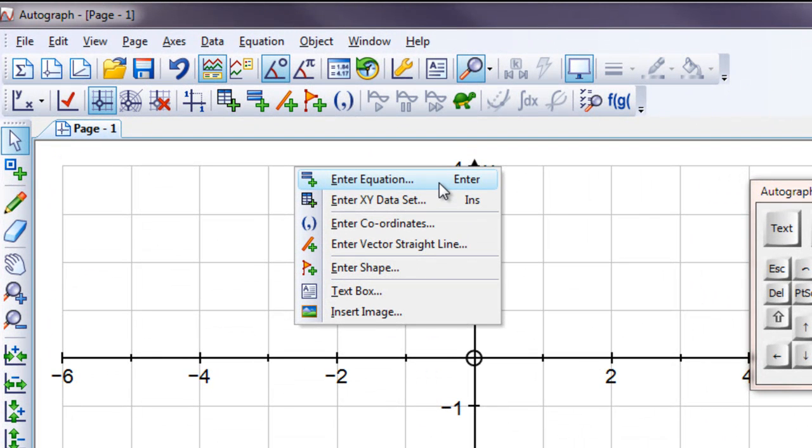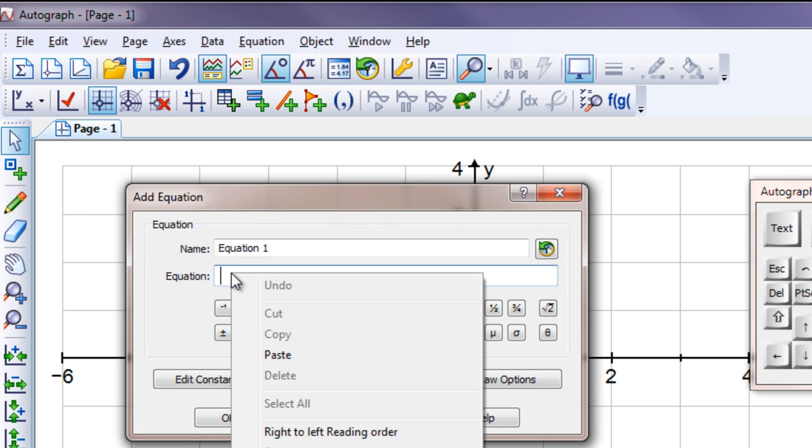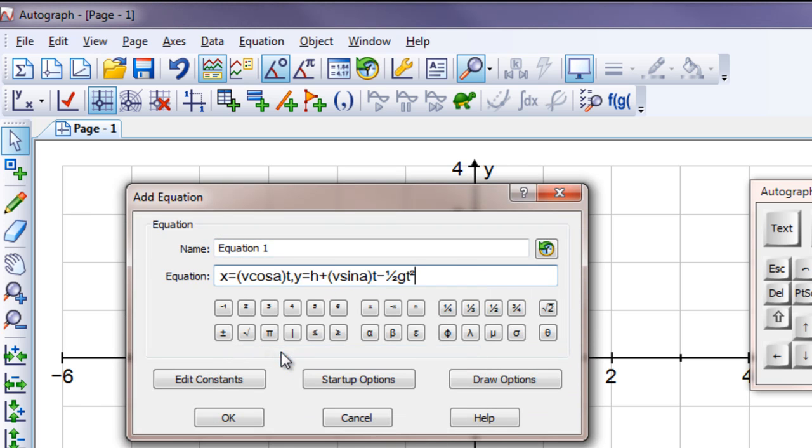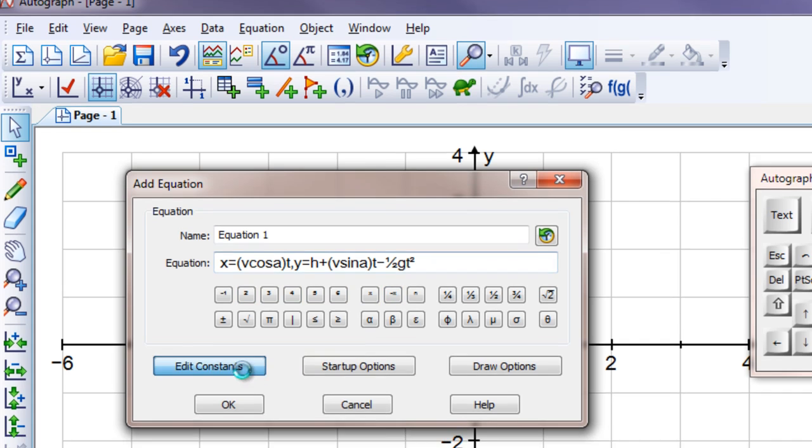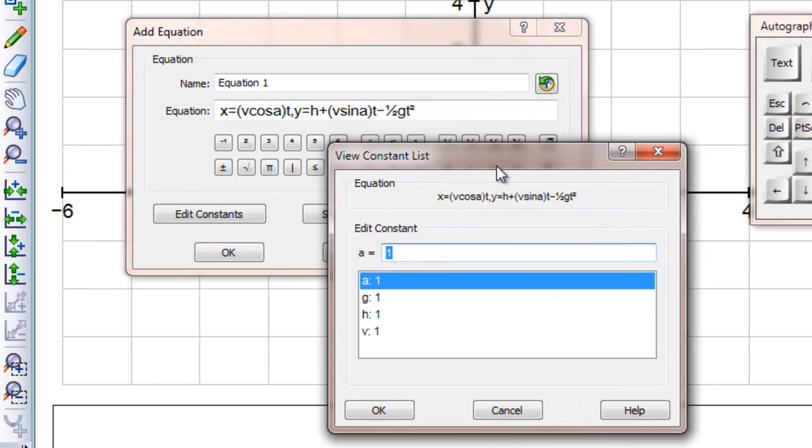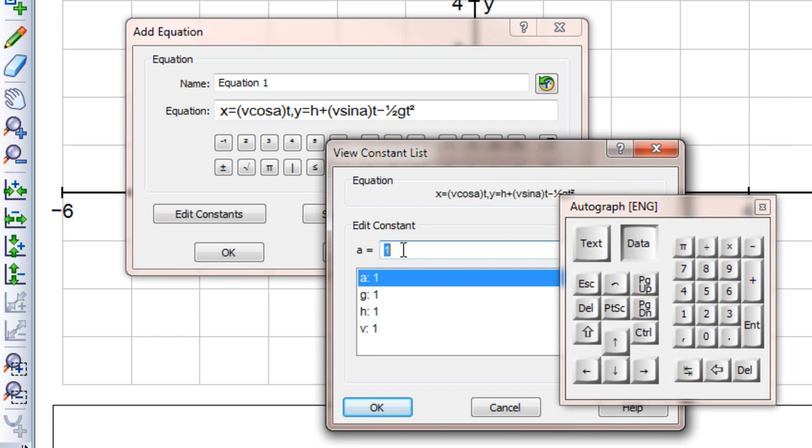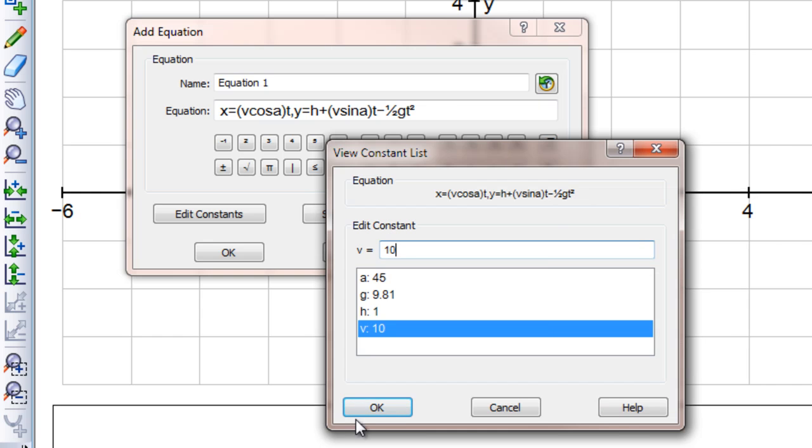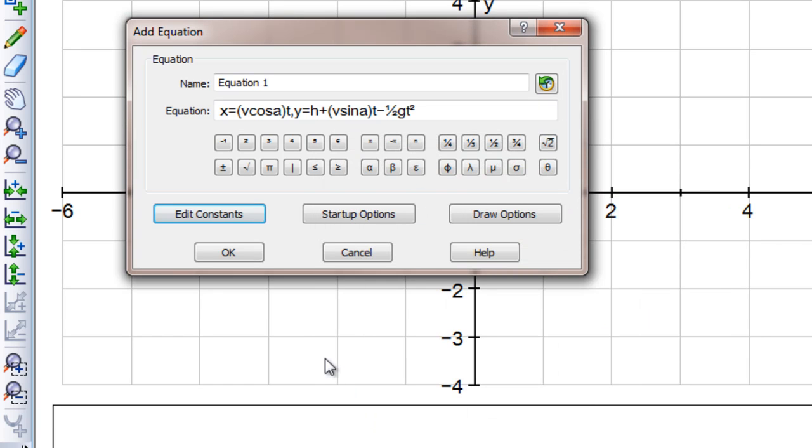So I'm going to right-click Enter Equation. And here you can see you can just paste it in. Now it's taken the alpha as a regular A character, but we do have an alpha character if we wanted to use that. And we're just going to have a look at the constants now. We want to set the angle to 45, the gravitational acceleration to 9.81, leave the height at 1 meter, and velocity of 10 meters per second.